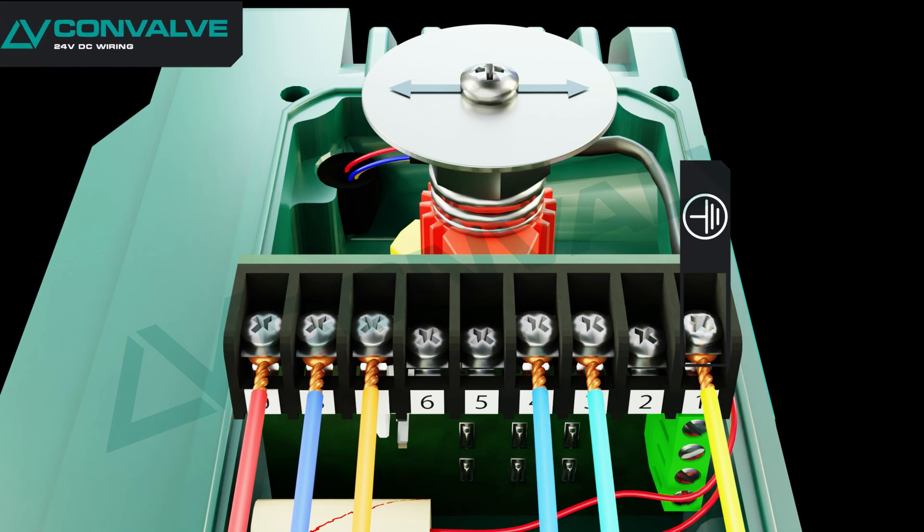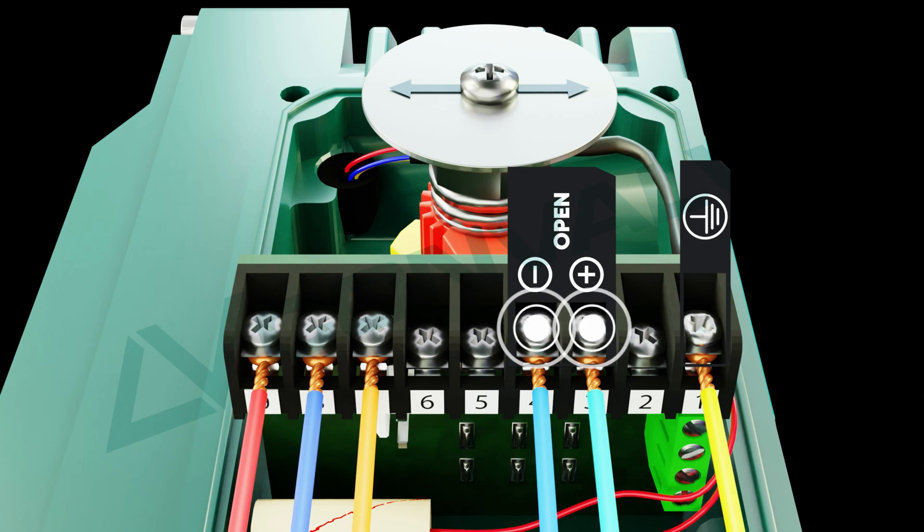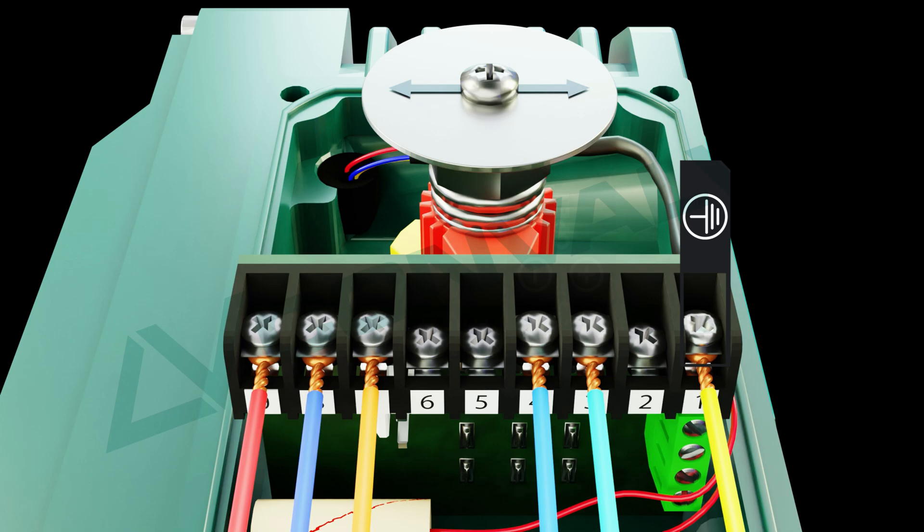For DC voltage units, to rotate or open the actuator in the counterclockwise direction, apply a positive DC voltage to terminal 3 and a negative DC voltage to terminal 4. The actuator will rotate counterclockwise until it reaches the internal limit switch and automatically shuts off.